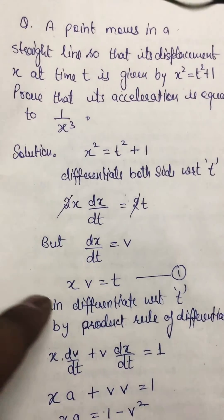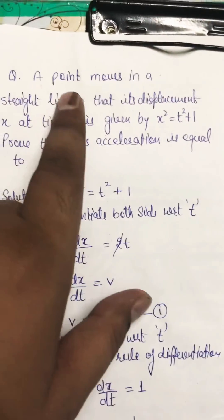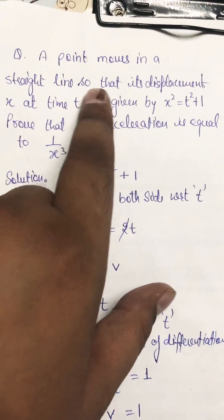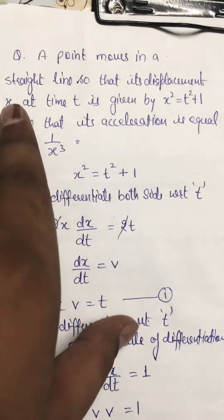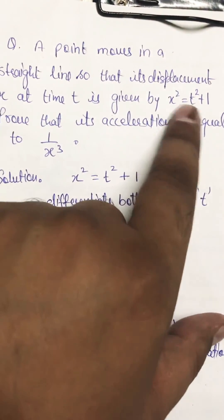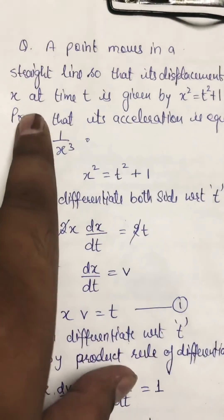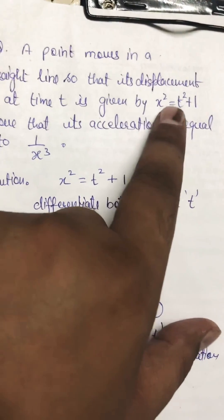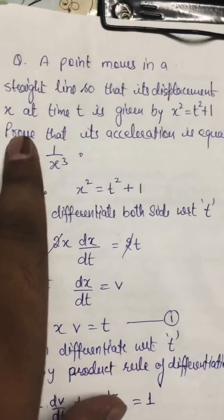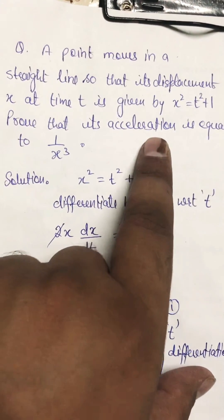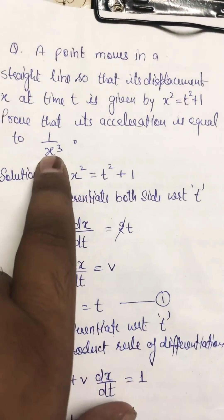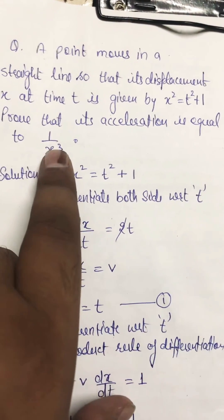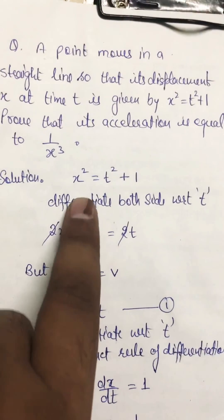This question belongs to motion in a straight line. A point moves in a straight line so that its displacement x at time t is given by x² = t² + 1, where x is displacement as a function of time t. We have to prove that acceleration is equal to 1/x³.